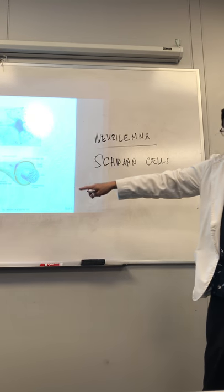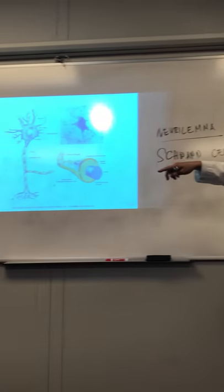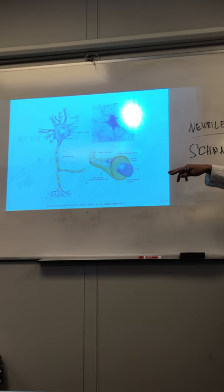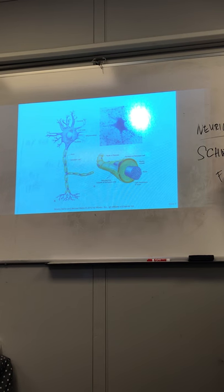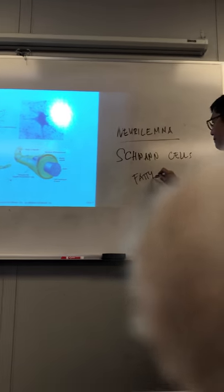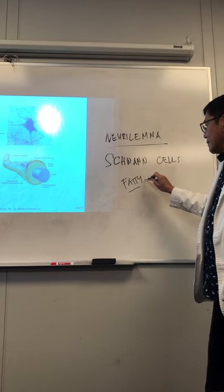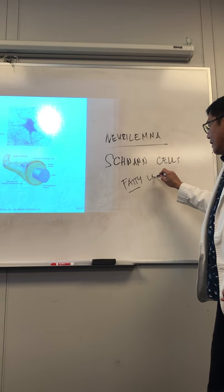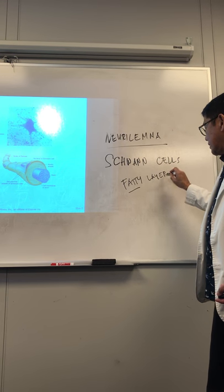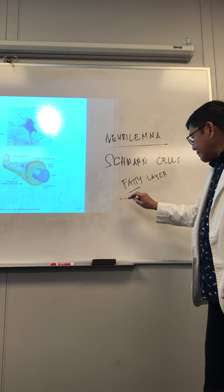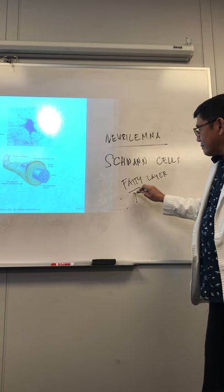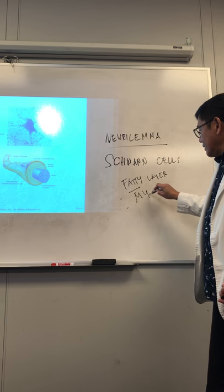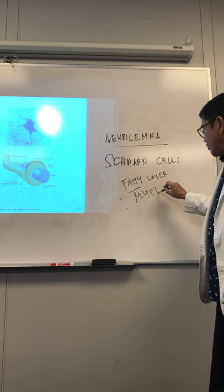The Schwann cells are connected with each other and together they form the neurolemma. You see the nuclei — the violet ones — those are the nuclei of the Schwann cells. Now underneath this layer of neurolemma is a fatty layer made up of fat, and that layer is known as the myelin sheath.